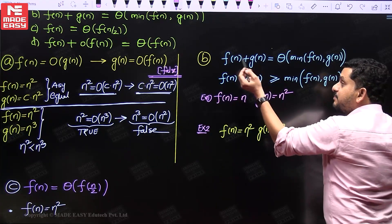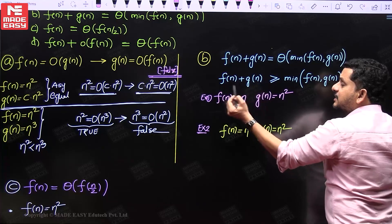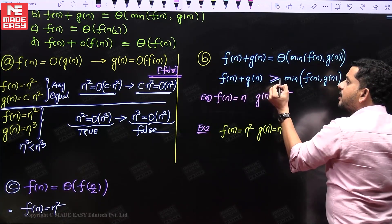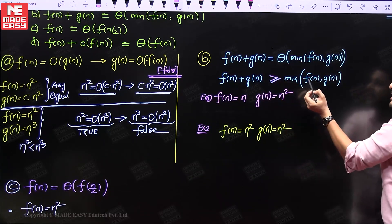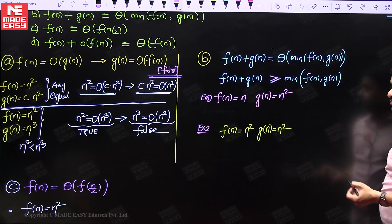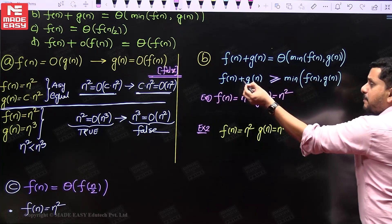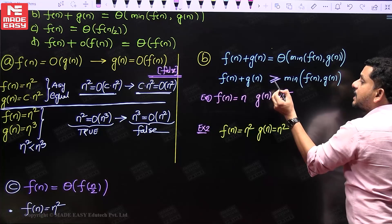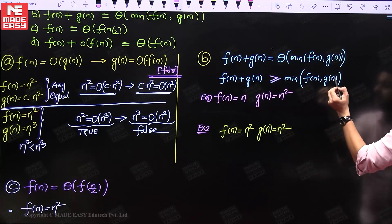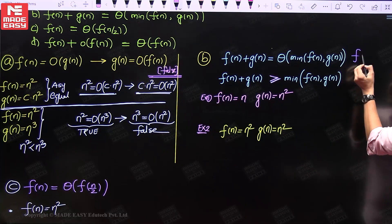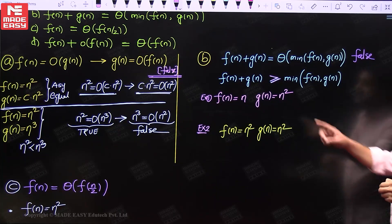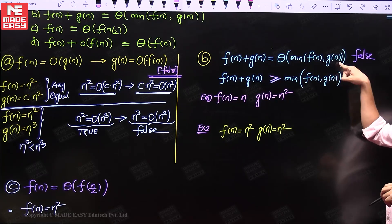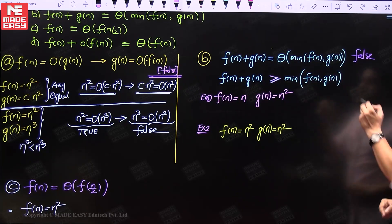The second statement: f plus g is theta of minimum of f and g. If you compute f plus g, the leading term can be bigger than or equal to the minimum of them. So f plus g can become asymptotically bigger than the minimum of them, and in that case the theta notation is not applicable.